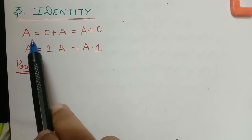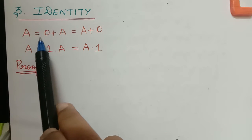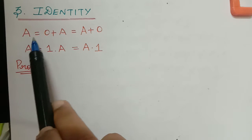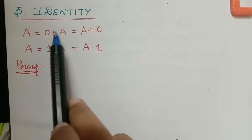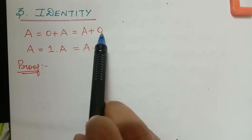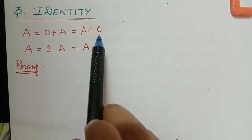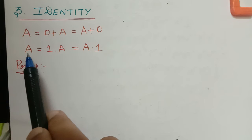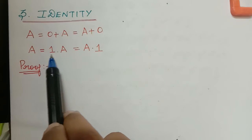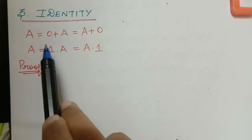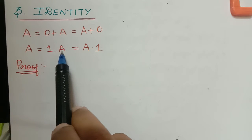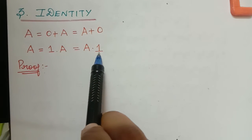The identity property says that a plus 0 equals a, which equals 0 plus a, which equals a plus 0, where this 0 is the closed interval [0, 0]. Similarly, the multiplicative identity is 1, where that 1 equals the closed interval [1, 1]. So a equals 1 multiplied with a, which equals a multiplied with 1.